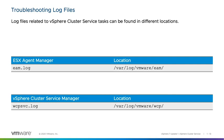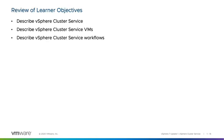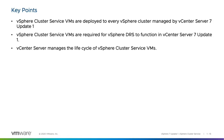At the end of this lesson, we've described vSphere Cluster Service, described vSphere Cluster Service VMs, and described vSphere Cluster Service workflows. The key points are: vCLS VMs are deployed to every vSphere cluster managed by vCenter Server 7 Update 1; vCLS VMs are required for DRS to function in vCenter Server 7 Update 1; and vCenter Server manages the lifecycle of the vCLS VMs.